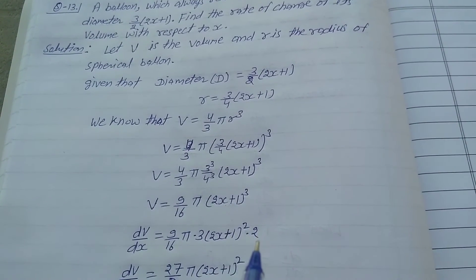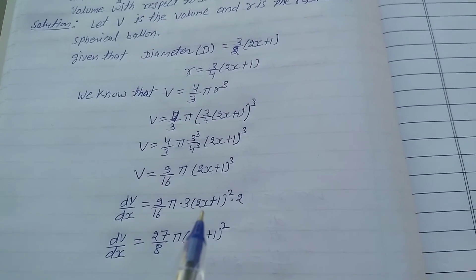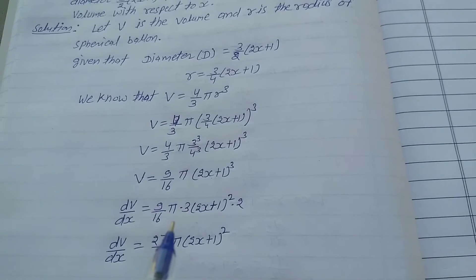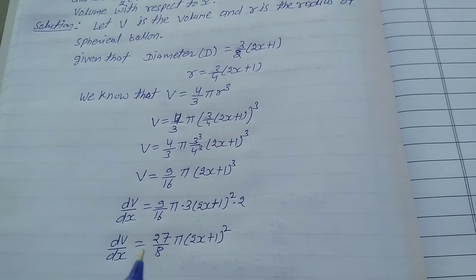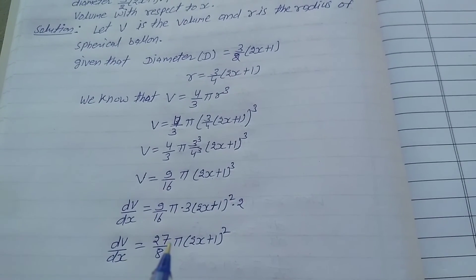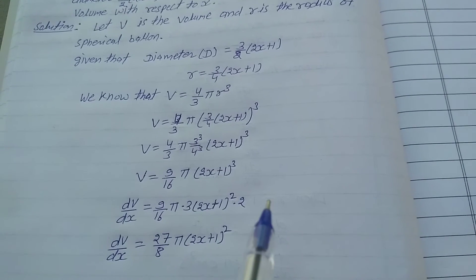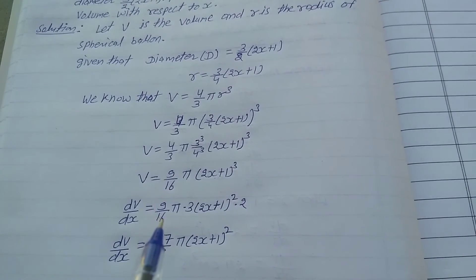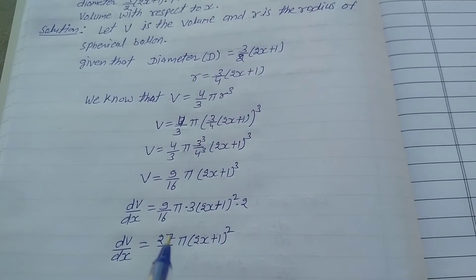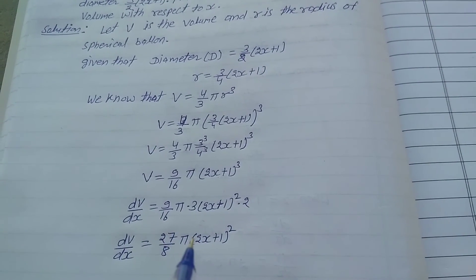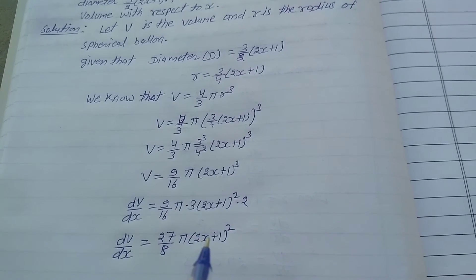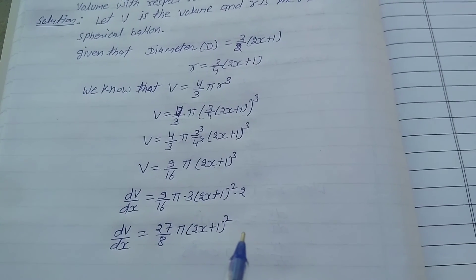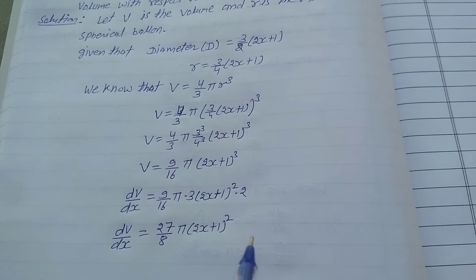Arranging the terms: 9 × 3 = 27, and multiplying by 2 in the numerator with 16 in the denominator gives 27/8. So dV/dx = 27/8 × π × (2x + 1)². That is the final answer for dV/dx.